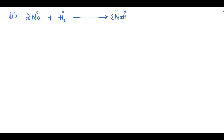I will find the oxidation state of hydrogen in the product: +1 + x = 0, so x = -1. The oxidation state of hydrogen on the product side is -1.